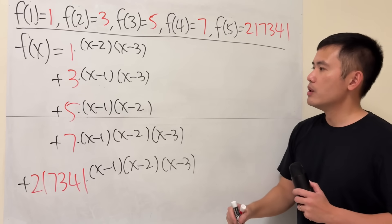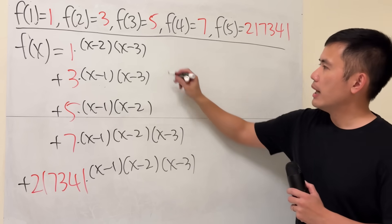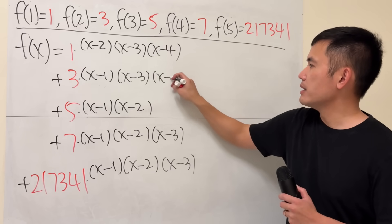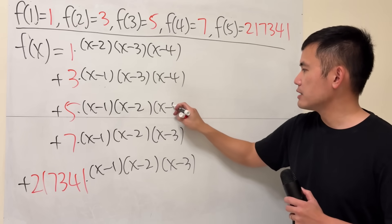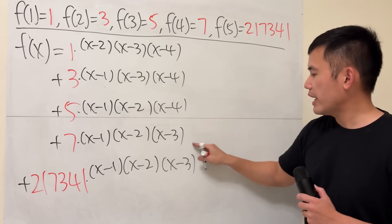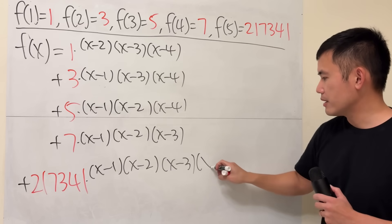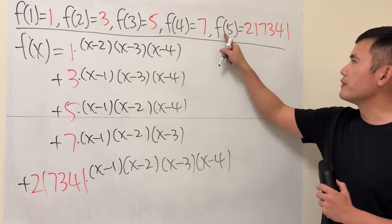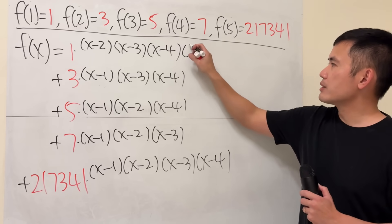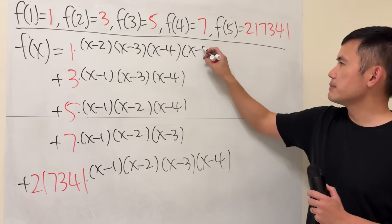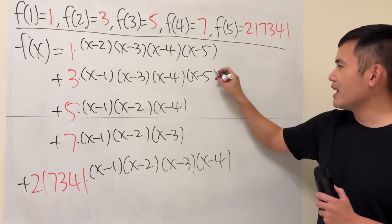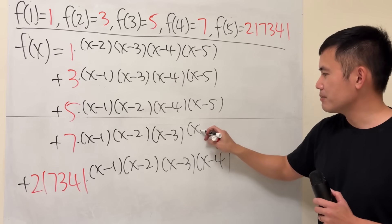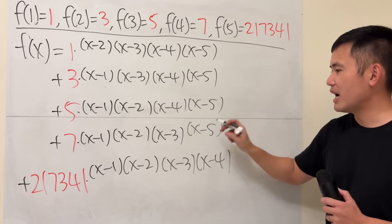For f(4), we need (x − 4) here, (x − 4) here, (x − 4) here, but not in the fourth term — and then here. And lastly, f(5): multiply by (x − 5), (x − 5), (x − 5), and (x − 5).